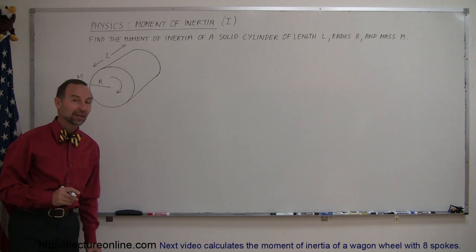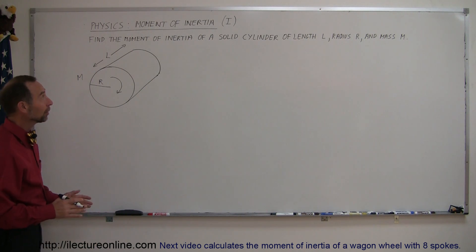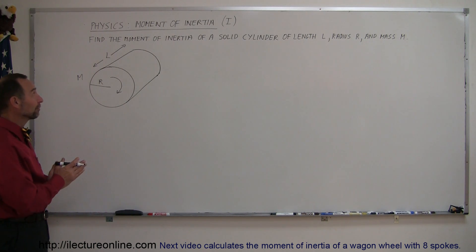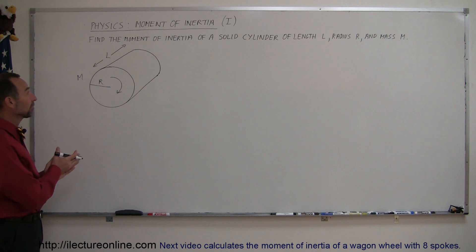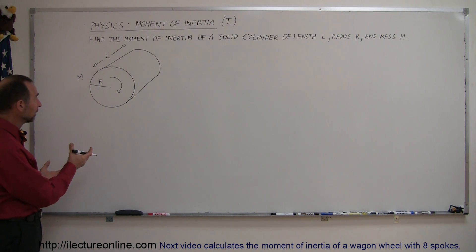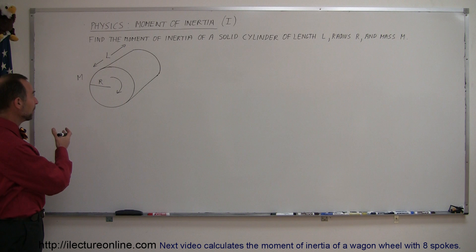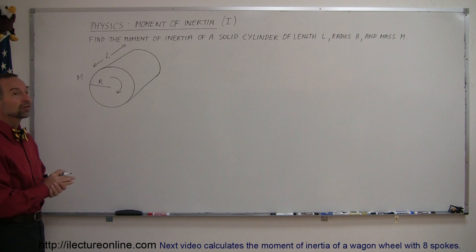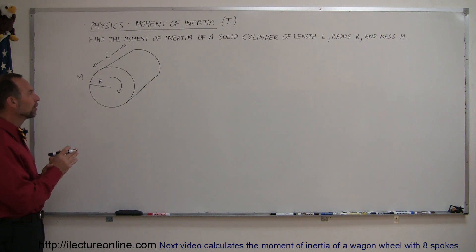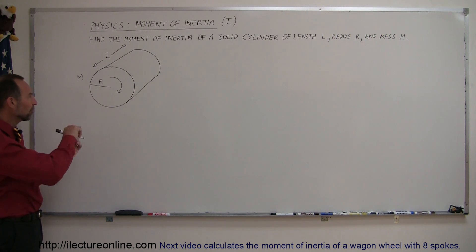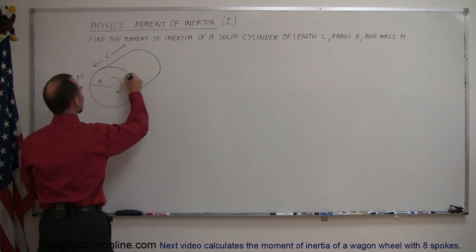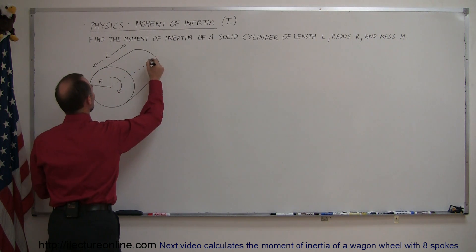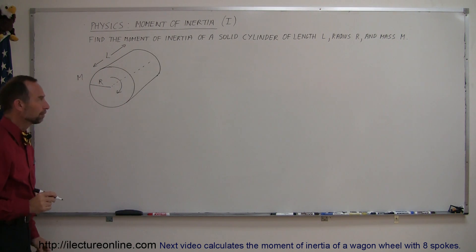Welcome to our lecture online. Here's another example of how we're going to find the moment of inertia of an oddly shaped object. In this case it's a solid cylinder with length L, mass M, and radius R. Notice that it's rotating about a central axis that runs through the length of the cylinder.